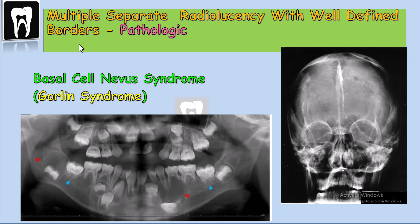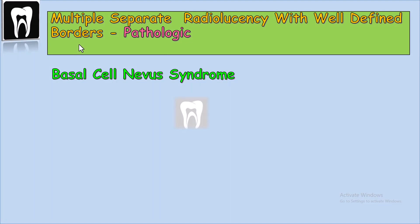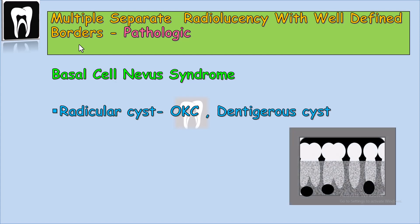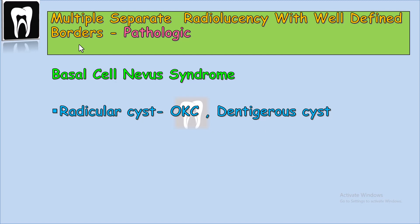This syndrome is also called Gorlin syndrome. In this panoramic radiograph from a child, we can see two cysts inside the mandible around the crown of the third molar and the canine — both cysts have displaced and pushed down the associated teeth. In the posterior-anterior skull radiograph, you can see calcification of the falx cerebri. Both of these findings lead our diagnosis to a syndromic condition. The cysts in basal cell nevus syndrome can be radicular cysts at the apex, or OKC and dentigerous cysts at the coronal of the teeth.